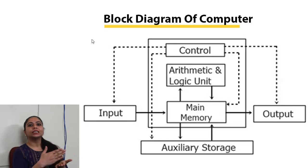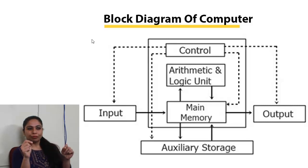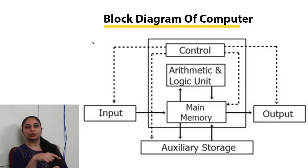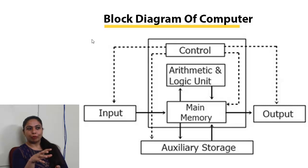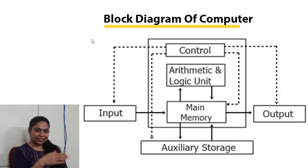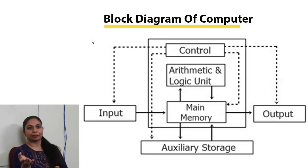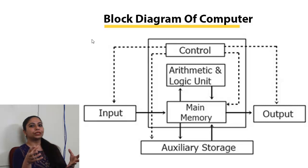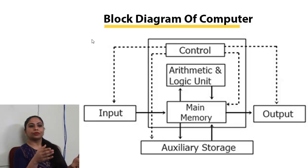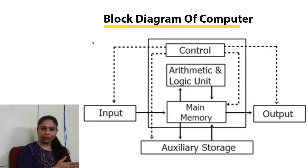A block diagram is drawn using rectangular or square boxes, which is the reason it is called a block diagram. In the diagram, various rectangular boxes are used with the names of components written in them. The boxes are connected through arrows which show the flow of information among various components of the computer system.